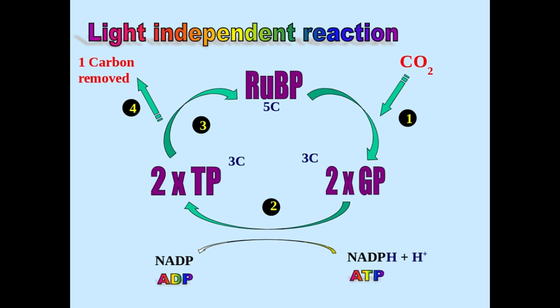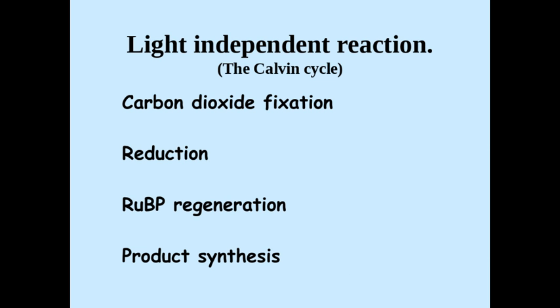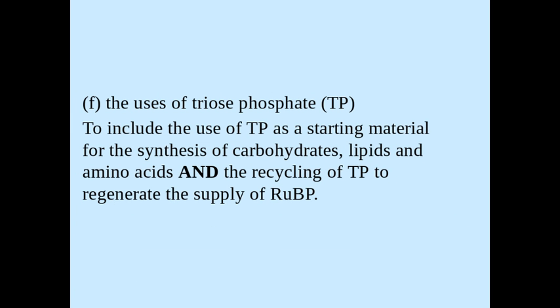That is the light independent reaction, which occurs in the stroma. We need to use this terminology when talking about the light independent stage, which is also known as the Calvin cycle — and that is everything you need to know. Good luck with your exam.